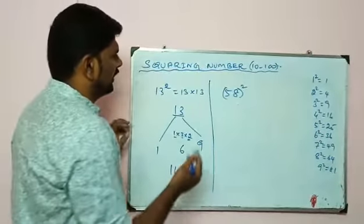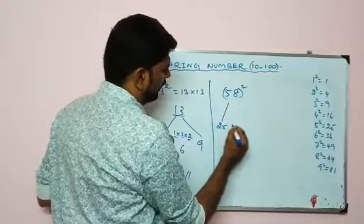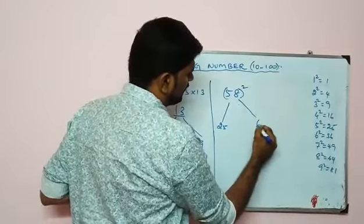58 square. Now 5 square is 25, 8 square is 64.